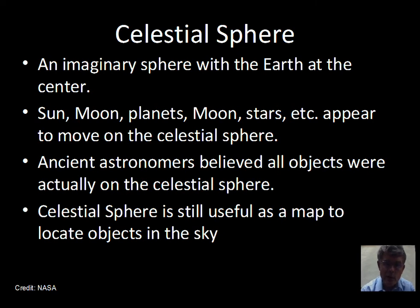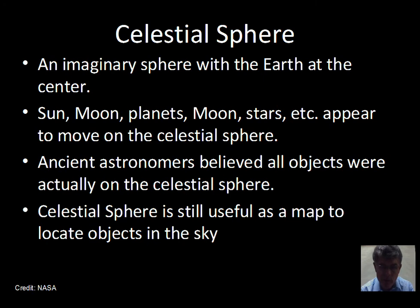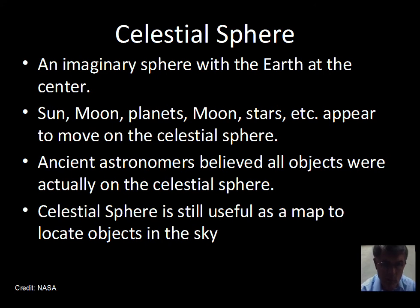Our celestial sphere is an imaginary surface. Many, many years ago, people believed that it was a real surface that the stars were embedded in, and somehow the planets and the Moon moved around on the sphere. But it's an imaginary sphere — there is no actual surface, a big object around the Earth with the Earth at the center.